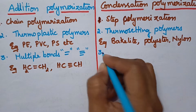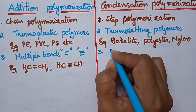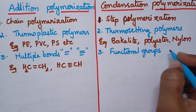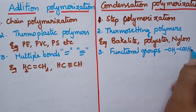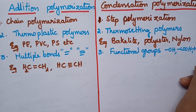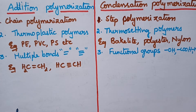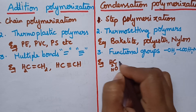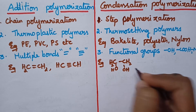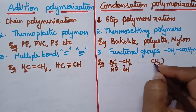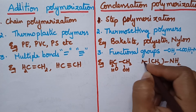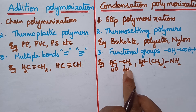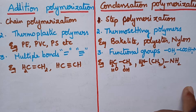Whereas the monomers containing active functional groups such as –OH, –COOH, and –NH₂ participate in condensation polymerization. Good examples of such monomers include glycol (CH₂OH–CH₂OH) or hexamethylenediamine. The monomers must contain at least two active functional groups to participate in condensation polymerization.